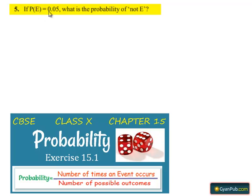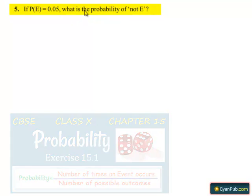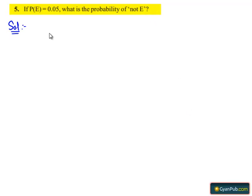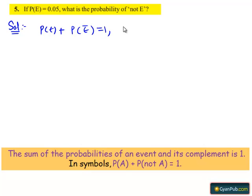Fifth question. If P of E equals 0.05, what is the probability of not E? Moving on to the solution, we know that P of E plus P of E bar equals 1, where E bar stands for not E, and E and E bar are complementary events.